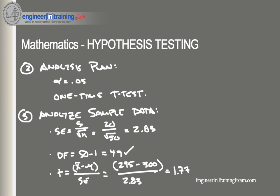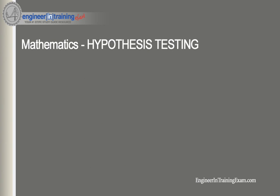Next, we find the p-value and interpret our results. Heading back to the t-distribution tables, we find that the probability falls somewhere between the 0.05 and 0.10 probability tails — around 0.085 — and that is greater than 0.05. Because the p-value of approximately 0.085 is greater than the significance level of 0.05, we cannot reject the null hypothesis.